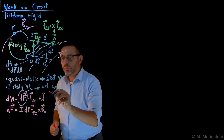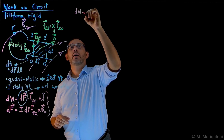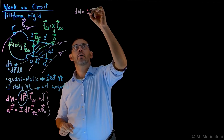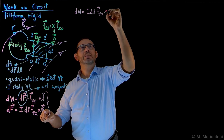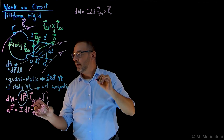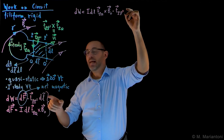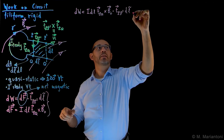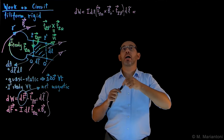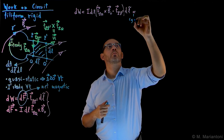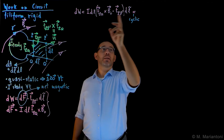Now let's put these two together. The work dW equals dF — which is I·DL·T_{P,Q} × B₀ — dotted with T_{P,P'}, times DL tilde. We can use the cyclic property of the triple product. Due to this cyclic property and the definition that DA = DL tilde × DL, this quantity is nothing but I times DA.